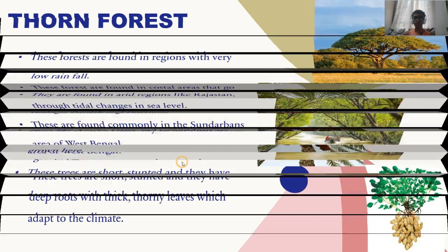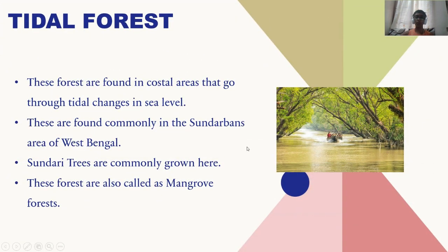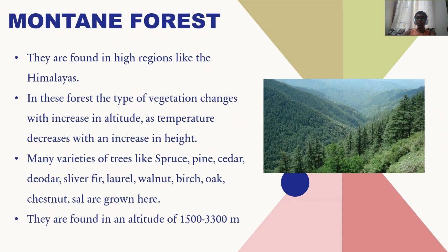Now let's know about tidal forests. These forests are found in coastal areas that go through tidal changes in sea level. They are found commonly in the Sundarbans region of Bengal, where Sundari trees are commonly grown. These forests are also called mangrove forests.